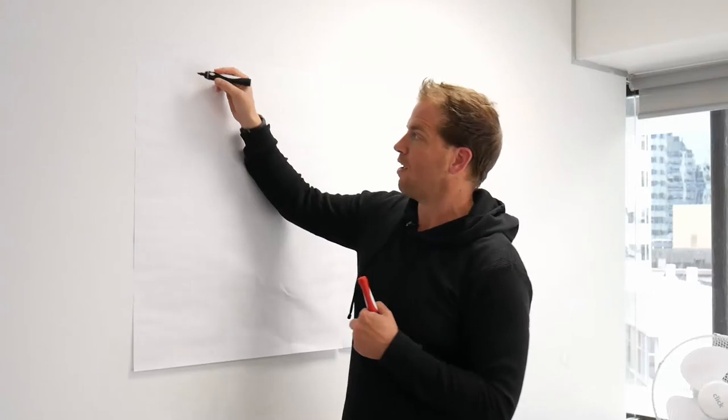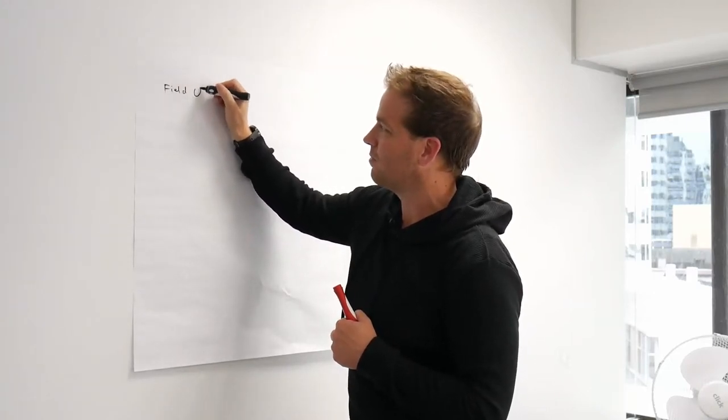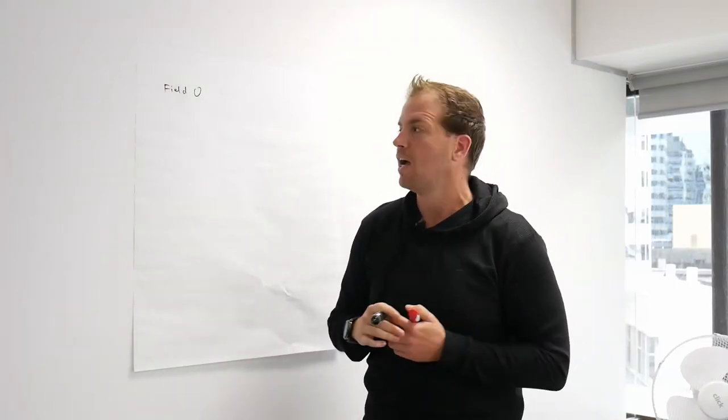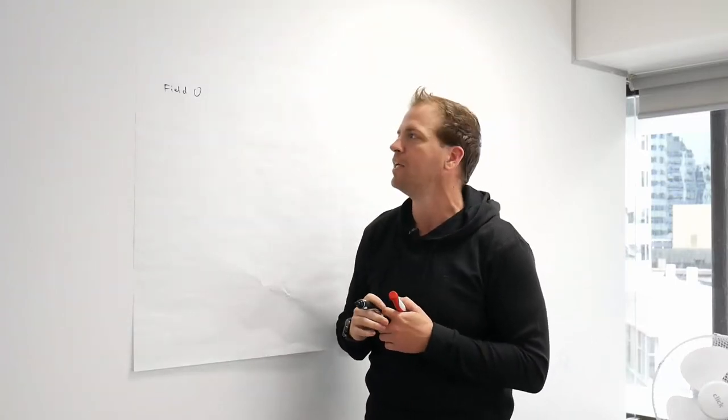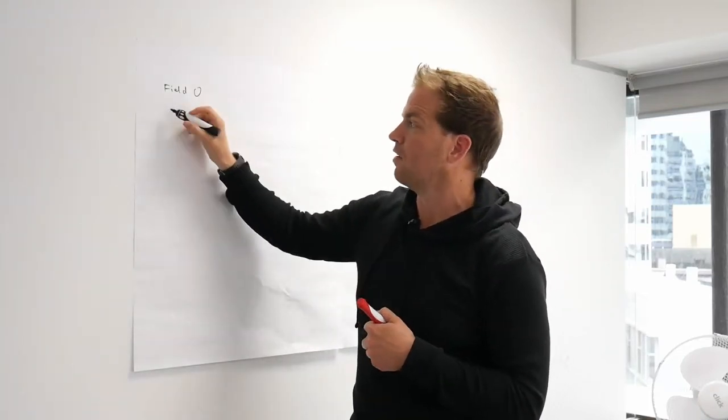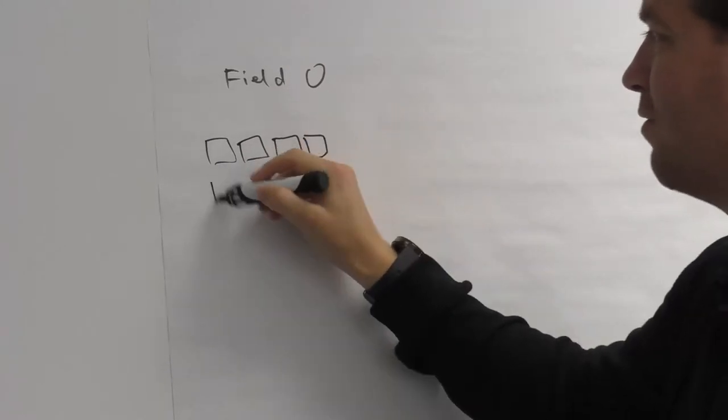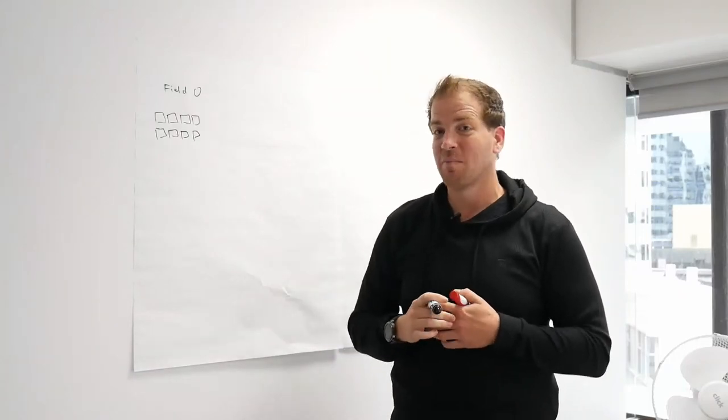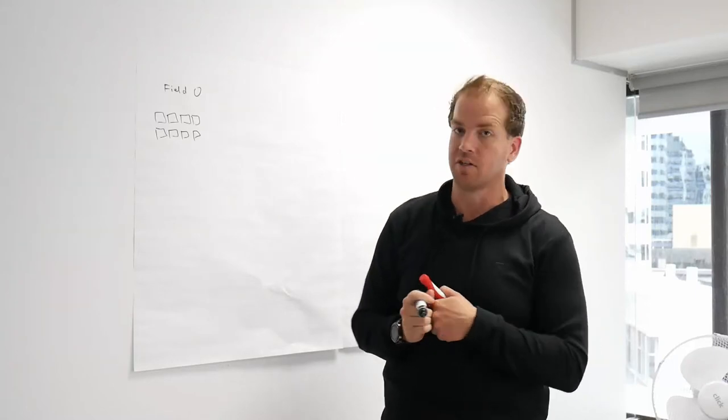So first of all, we have what we call Field Zero. Now Field Zero is those early opportunities, it's the ideas you, me and everyone else has, things that aren't really researched, they're just things that pop up in the middle of the night, you write down, things that come from outside, people are interested in working with us. And what we do is we bring them in, and effectively write up a nice little post-it note board with all the opportunities.